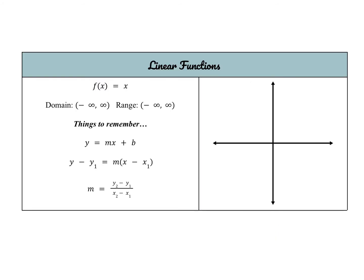I'm going to do a general overview of all the different types of functions that hopefully you remember from your previous math classes, and highlight some key things for each. The first is a linear function. The most basic parent function is y equals x — it goes through the origin with a slope of positive 1, and the domain and range are all real numbers. You can rewrite a linear function in slope-intercept form y equals mx plus b, or use point-slope form. The slope formula is essentially rise over run.